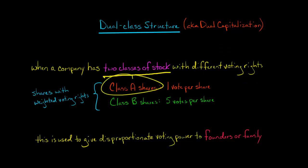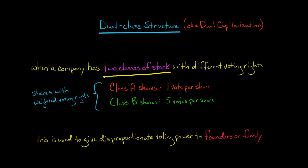Let's say we have a company with Class A common shares and Class B common shares. The Class A shares get one vote per share, and the Class B shares are five votes per share. Shareholder one has 100 shares of Class A, so they get 100 votes. But shareholder two has 100 shares of Class B, so they get 100 times five — 500 votes.